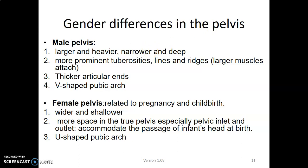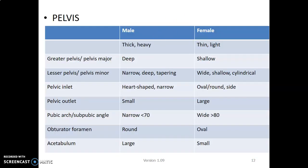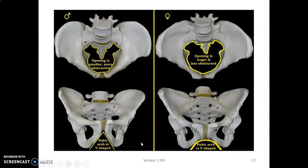The male pelvis is thick and heavy while the female pelvis is thin and light. The greater pelvis is deep in the male and shallow in the female. The lesser pelvis is narrow and deep in males but shallow and wide in females. The pelvic inlet is heart-shaped and narrow in males but round and oval in females. The pelvic outlet is small in males and large in females. The pubic arc is acute in males and wide in females. The obturator foramen is round in males and oval in females, and the acetabulum is larger in males.